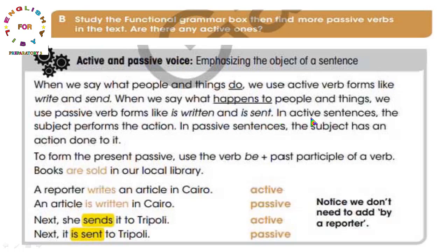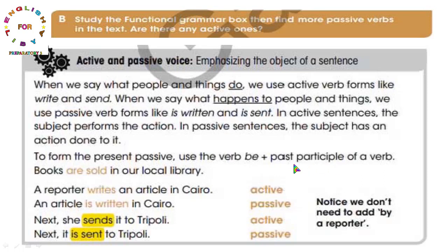In active sentences، the subject performs the action - الفاعل هو الذي يؤدي الفعل. In passive sentences نضع verb to be زائد Past Participle - التصريف الثالث للفعل، زي ما شرحنا في المثال السابق. Past participle of a verb هو التصريف الثالث للفعل.